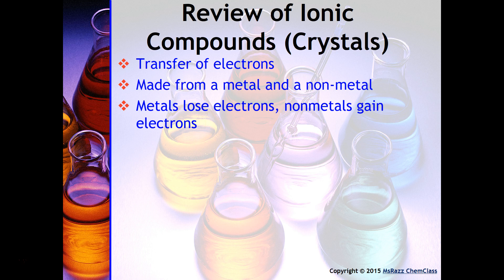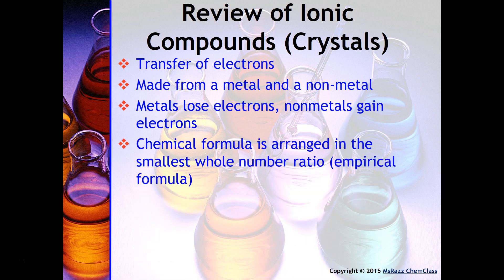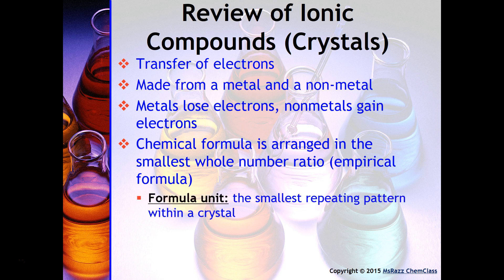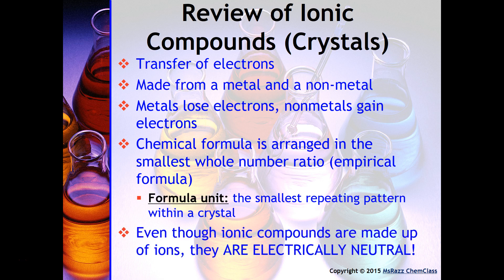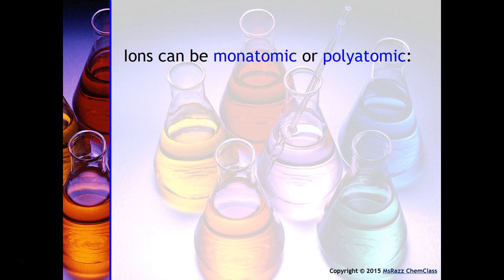The chemical formula for an ionic compound is arranged in the smallest whole number ratio, which we call the empirical formula. Remember, the formula unit is the smallest repeating pattern within a crystal. And finally, even though ionic compounds are made up of charged ions, they are electrically neutral, and that is because the number of positive ions are equal to the number of negative ions.